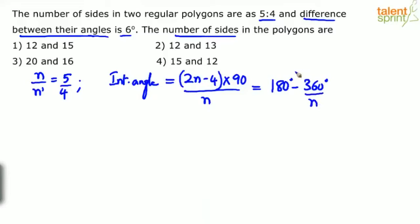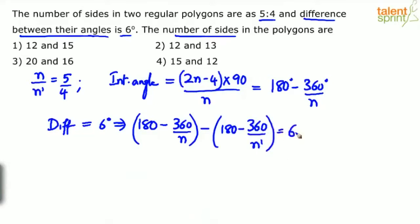The difference is equal to 6 degrees. For the first polygon, it's 180 - 360/n. For the second one, 180 - 360/n'. This equals 6. So we have two equations: n/n' = 5/4, and 180 - 360/n - (180 - 360/n') = 6.